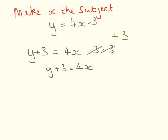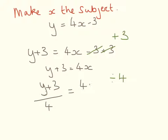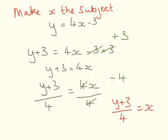The next thing we need to do is to get rid of the 4 from this side. Because it's 4 times x, we need to divide by 4. So y plus 3 divided by 4 equals 4x, and because we have a 4 and a 4 here they cancel each other out. So our answer is y plus 3 divided by 4 equals x.